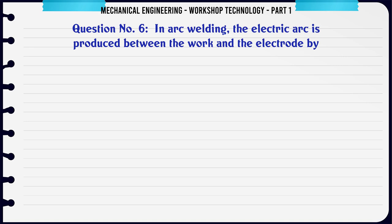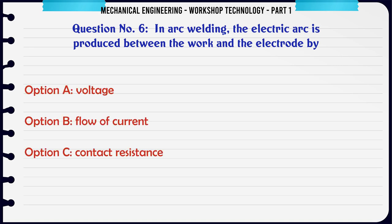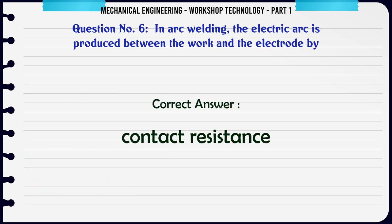In arc welding, the electric arc is produced between the work and the electrode by: A. Voltage. B. Flow of current. C. Contact resistance. D. All of these. The correct answer is: Contact resistance.